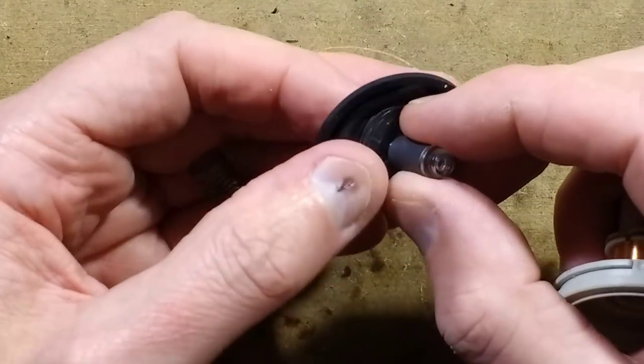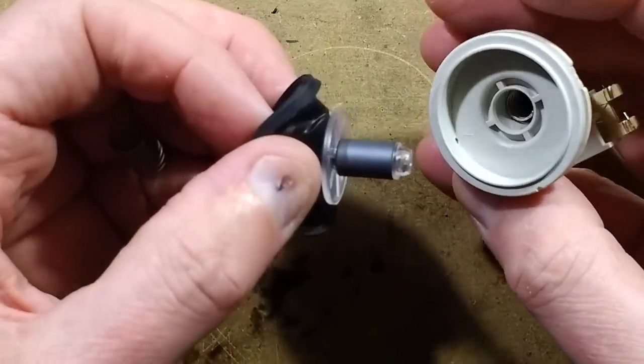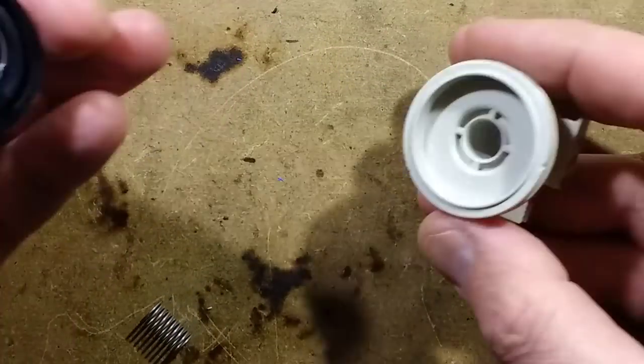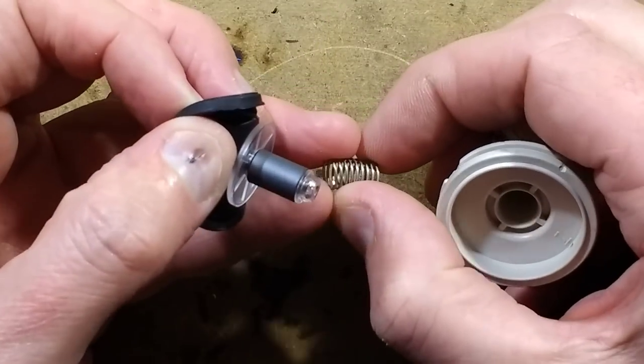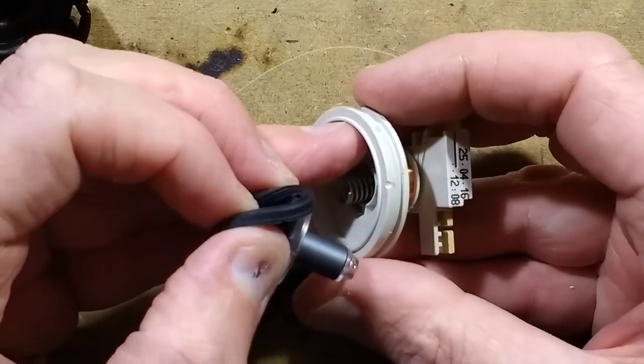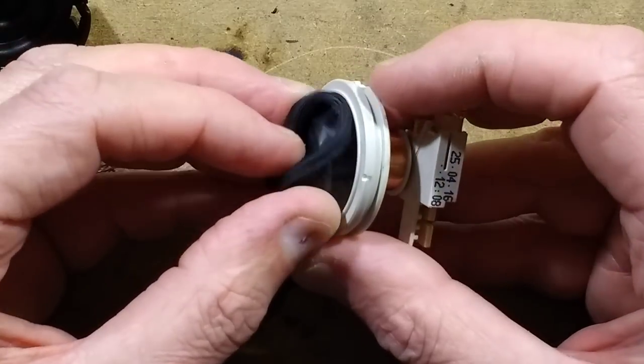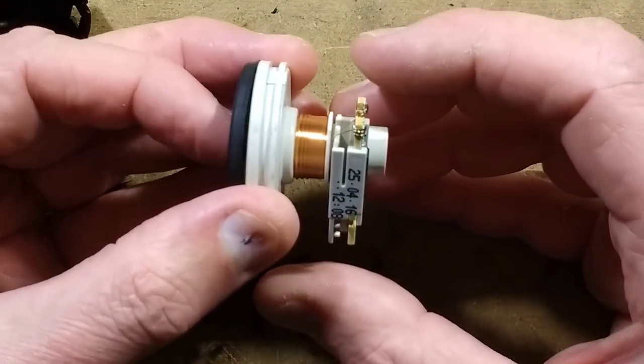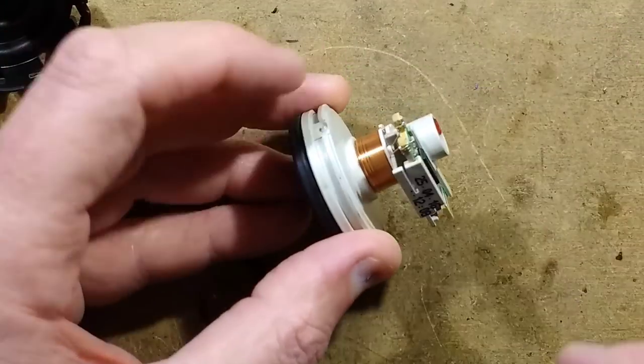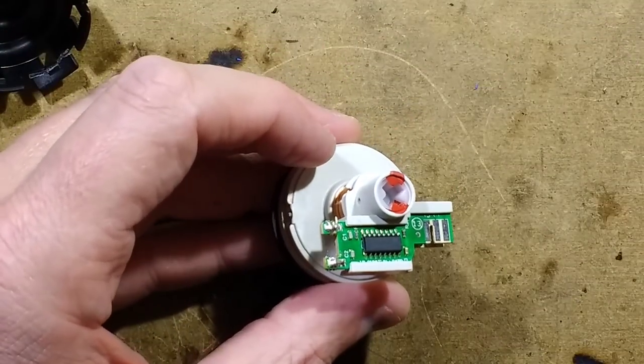It's got what looks like a ferrite core on it, so that is going to change—there's another spring up the end—so that is going to change the inductance of that coil as the pressure increases and this core gets pushed in. I wonder how it calibrates, or if it is generically calibrated out of the factory, which I'm guessing it would be.